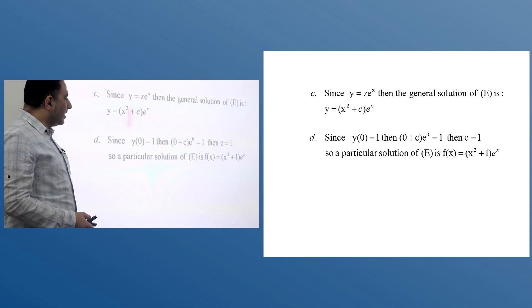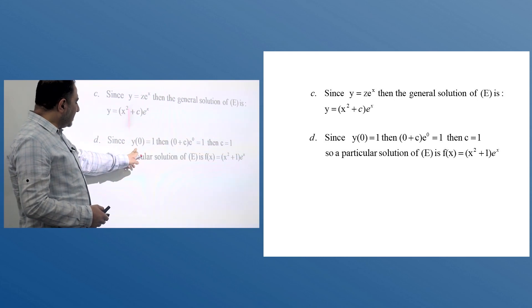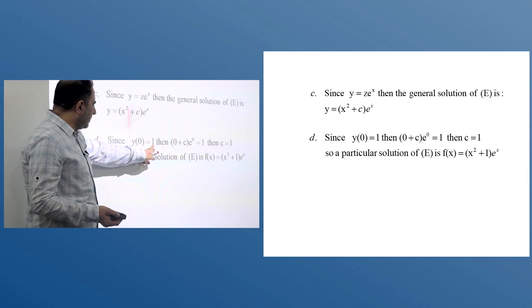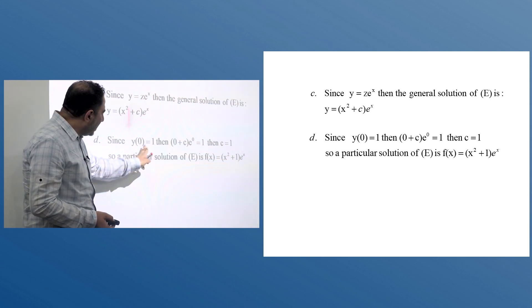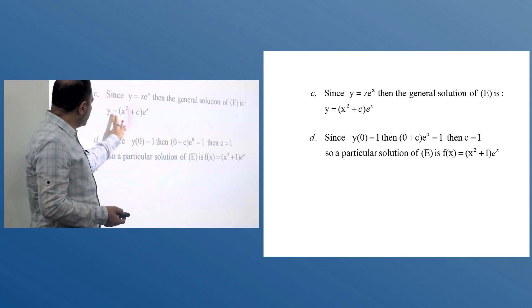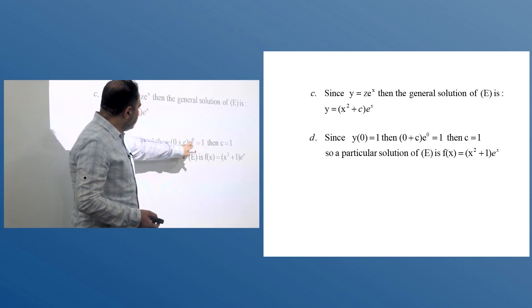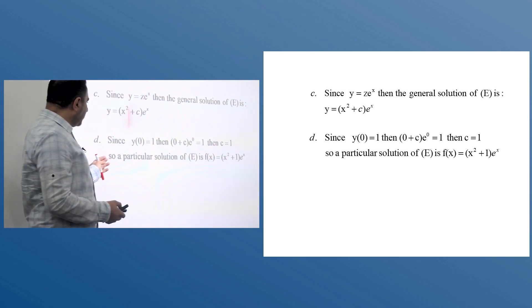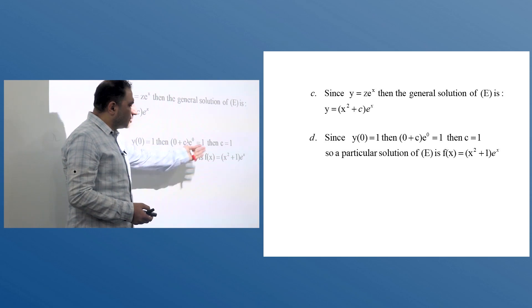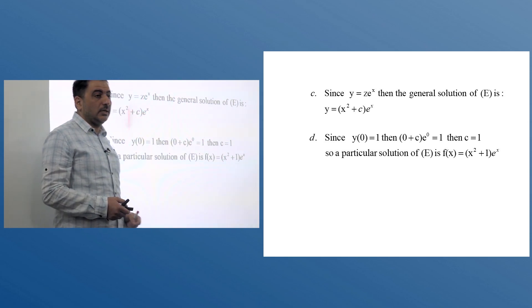To find the particular solution, we are given y(0) = 1. This means: replace x with 0 and y with 1. So 1 = (0 + C)·e^0, which gives C = 1. The particular solution of E is therefore F(x) = (x²/2 + 1)·e^x.